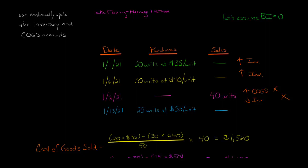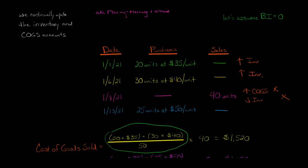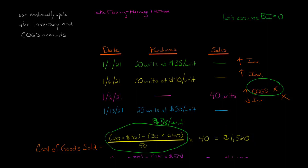That comes out to $38 a unit — that's the average cost. Now we multiply that by the number of units sold, which is 40, and that gives us $1,520. That would be the debit to cost of goods sold at this point in time.